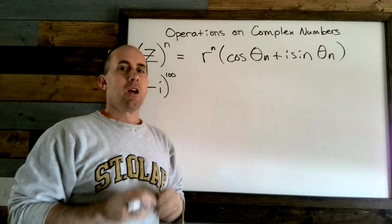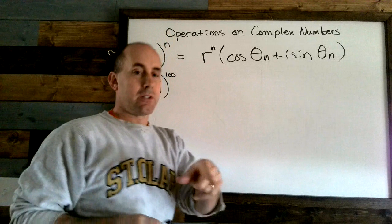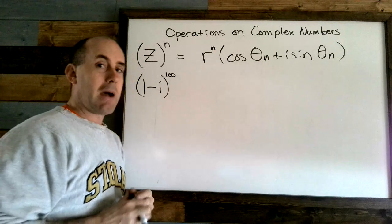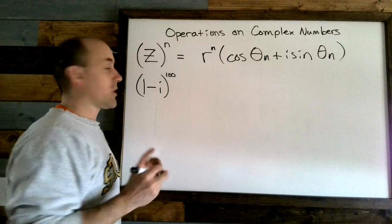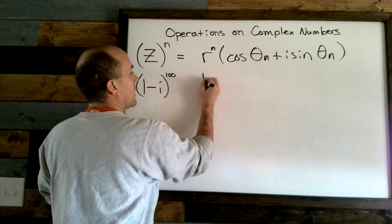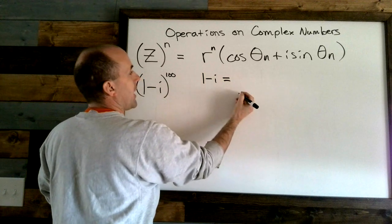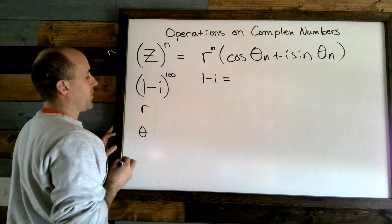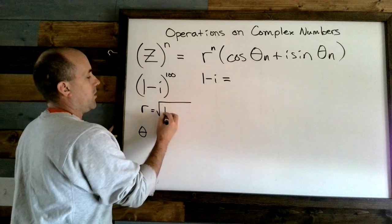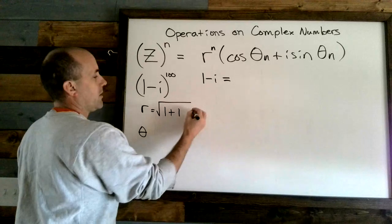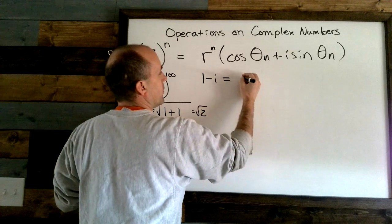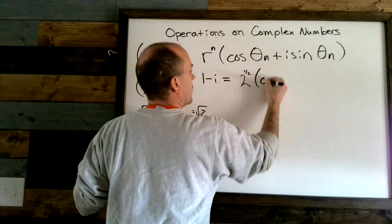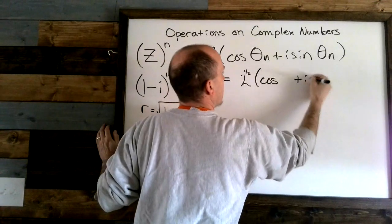Let's apply this to (1 − i)^100. First, we must convert it to trig form. One minus i is the same as r(cosine θ + i sine θ). We need r and theta. r equals √(1² + 1²) = √2, which we write as 2^(1/2). So we have 2^(1/2) times (cosine of something plus i sine of something).